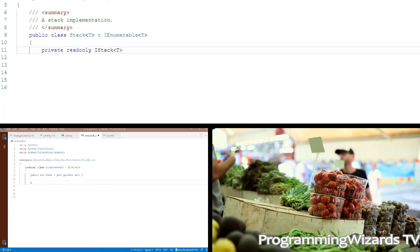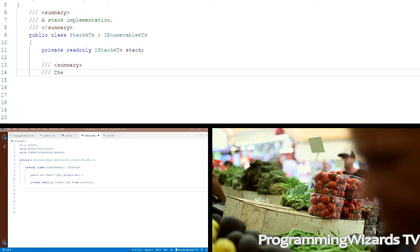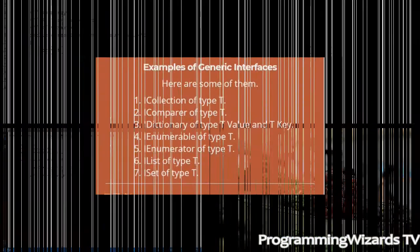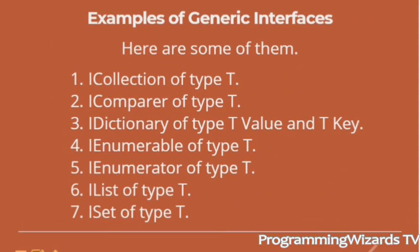However, most of the time the interfaces already defined in the System.Collections namespace fit the bill. Here are some of them. ICollection of type T. This defines general characteristics, e.g., size, enumeration, and thread safety, for all generic collection types.